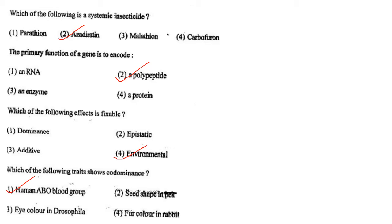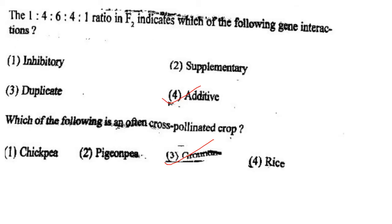Next one: Which of the following traits shows codominance? Option 1, human ABO blood group; option 2, seed shape in pea; option 3, eye color in Drosophila; option 4, fur color in rabbit. Answer is option 1: human ABO blood group.